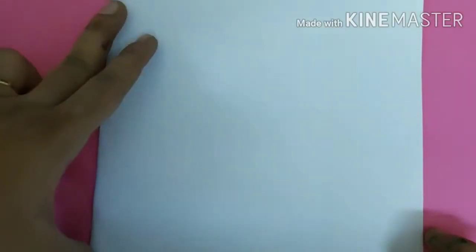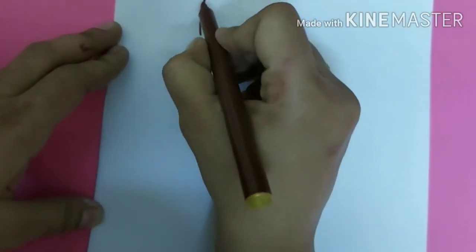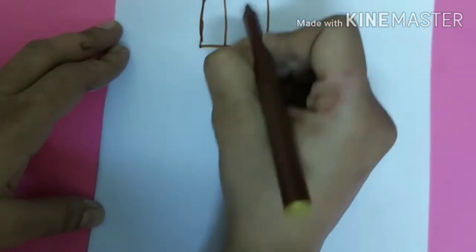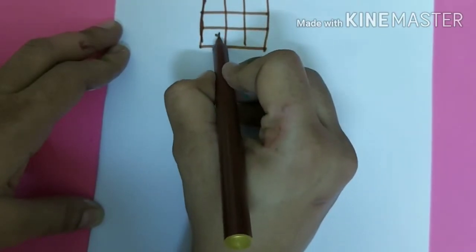Hello kids, I'm again back with one easiest method of table of three. In this method you have to draw one three by three grid like this way. After that in this grid you have to write down numbers like this way.